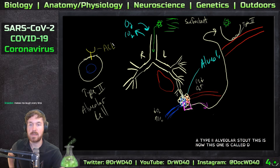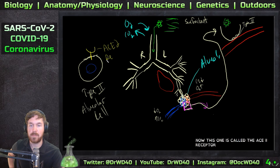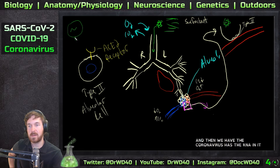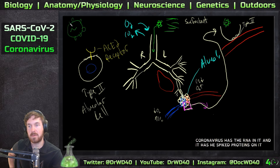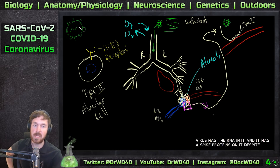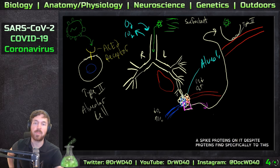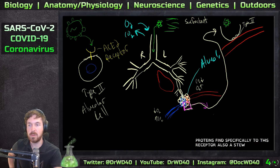...the ACE2 receptor. The coronavirus has the RNA in it and it has these spike proteins on it. The spike proteins bind specifically to this receptor - ACE2.